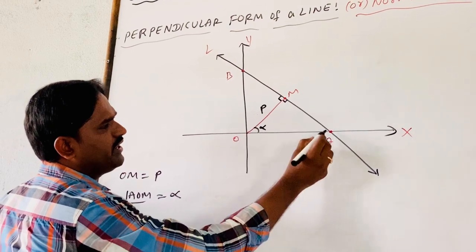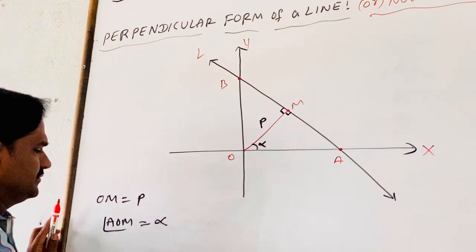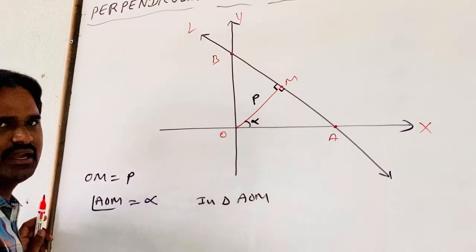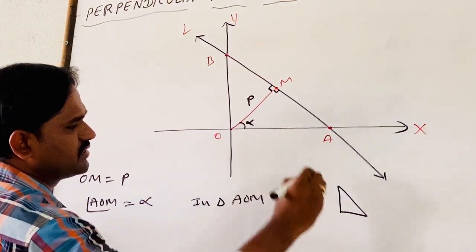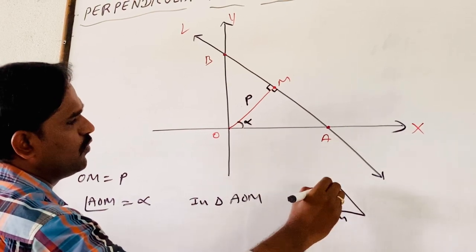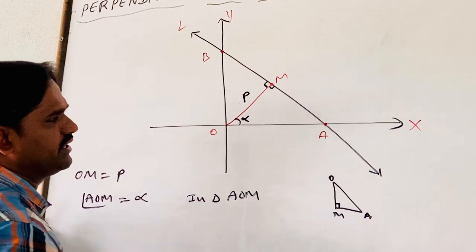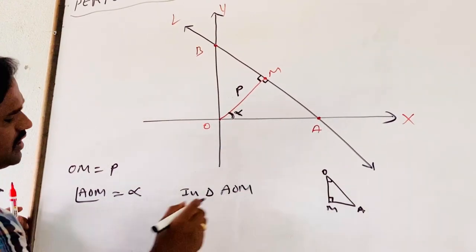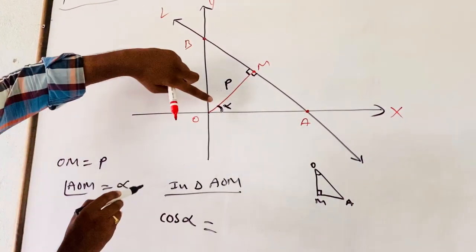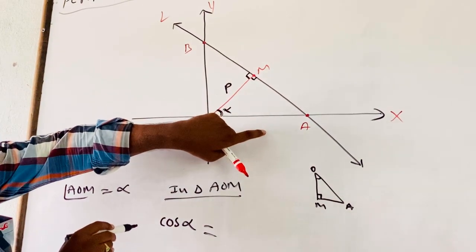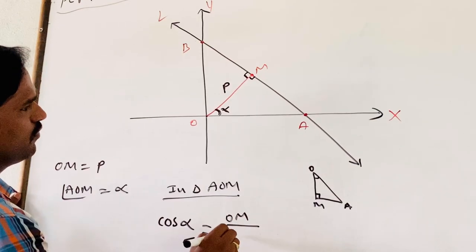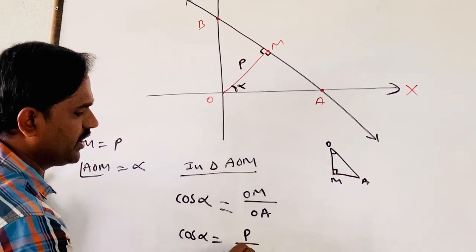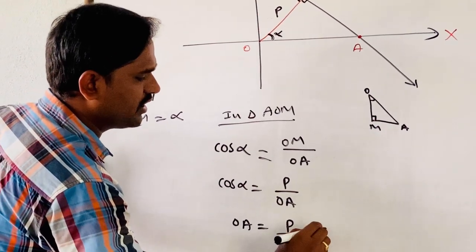To find the coordinates of A and B, we will then find the equation of the line. In triangle AOM, the angle at M is 90 degrees. By taking angle alpha at O, cos alpha equals adjacent over hypotenuse, which is OM over OA. Since OM equals P, we get cos alpha equals P over OA. Therefore OA equals P over cos alpha, or P secant alpha.